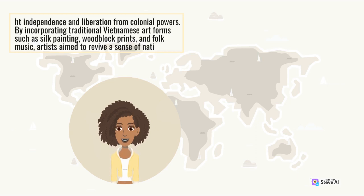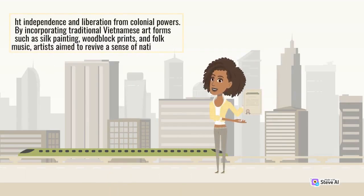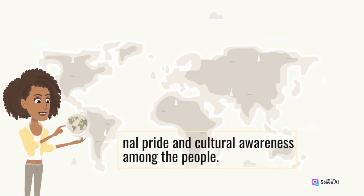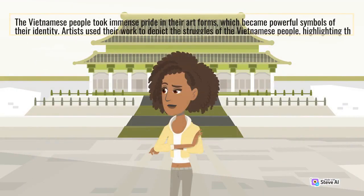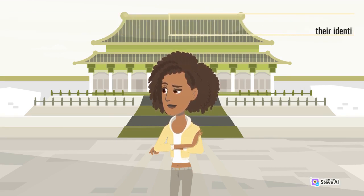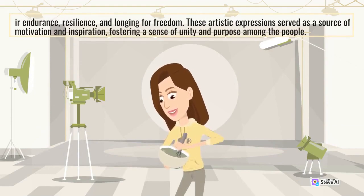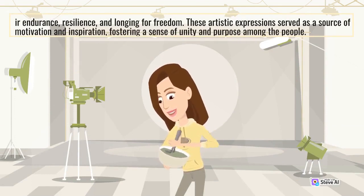By incorporating traditional Vietnamese art forms such as silk painting, woodblock prints, and folk music, artists aimed to revive a sense of national pride and cultural awareness among the people. The Vietnamese people took immense pride in their art forms, which became powerful symbols of their identity. Artists used their work to depict the struggles of the Vietnamese people, highlighting their endurance, resilience, and longing for freedom. These artistic expressions served as a source of motivation and inspiration, fostering a sense of unity and purpose among the people.